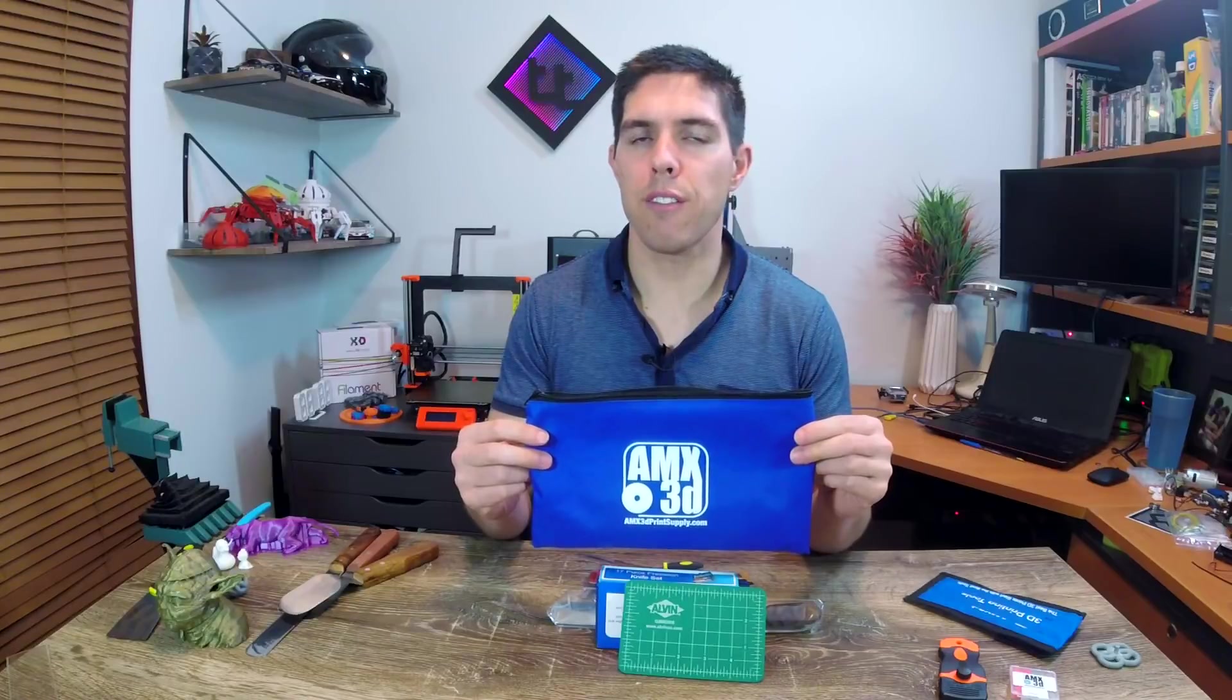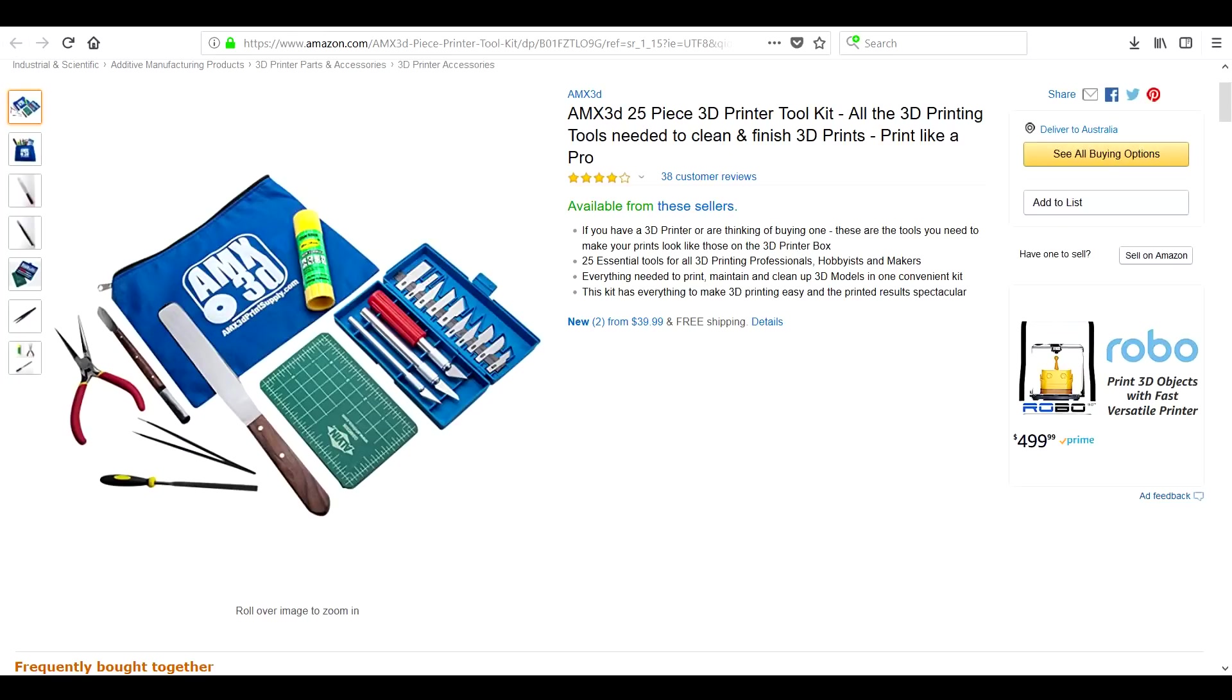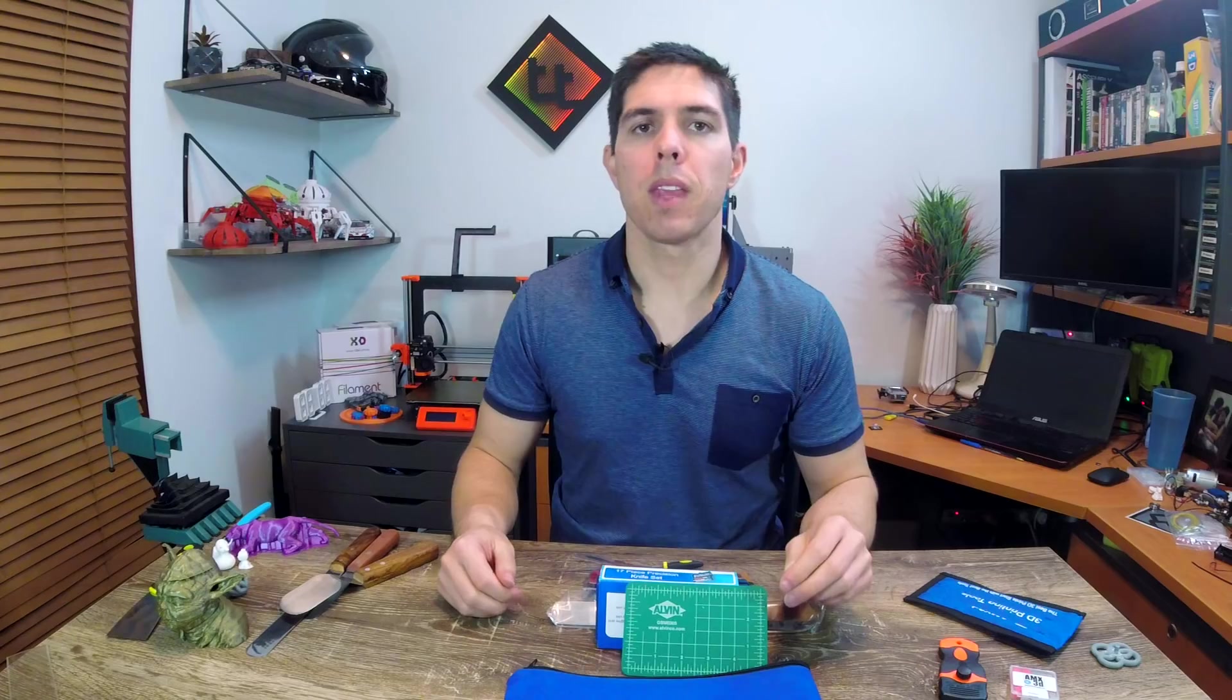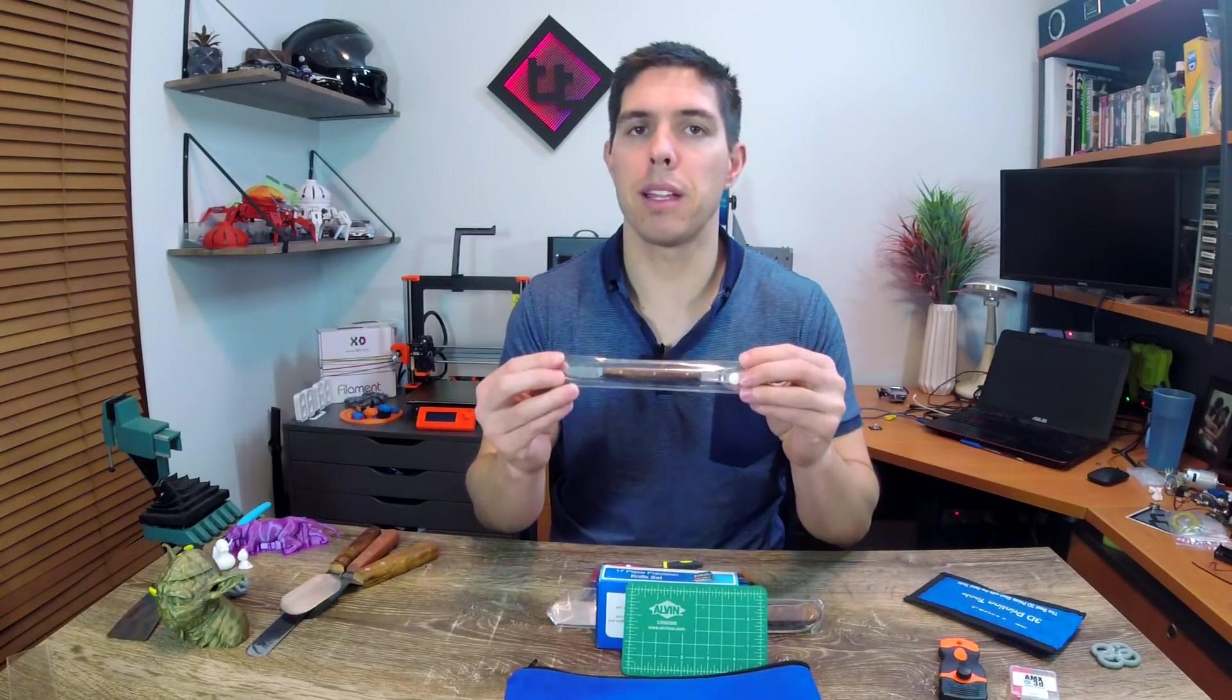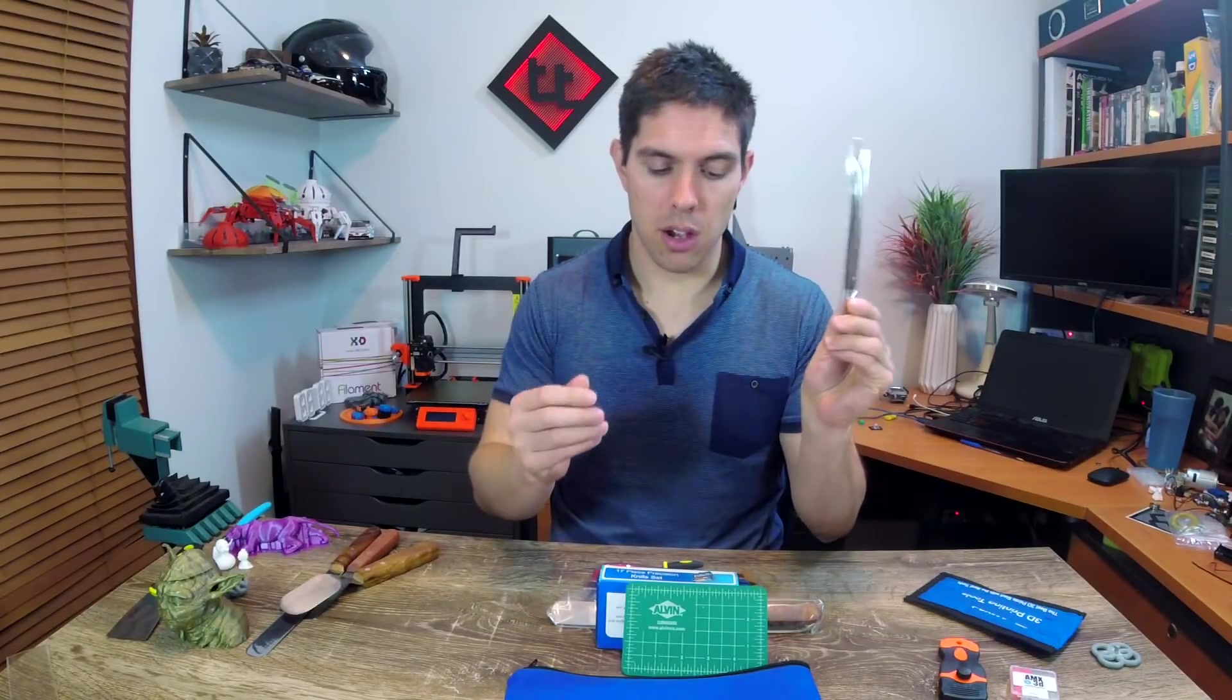Next up we have this 25-piece 3D printer tool kit and this is advertised as being perfect for a beginner in setting up for 3D printing. Let's go through the items one by one. Firstly we have our same double-ended tool from the utility set, I highly recommend that.